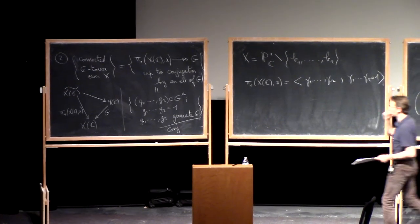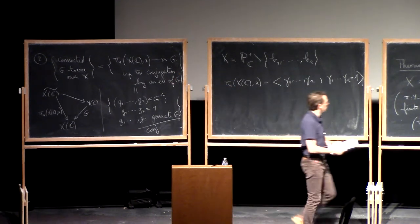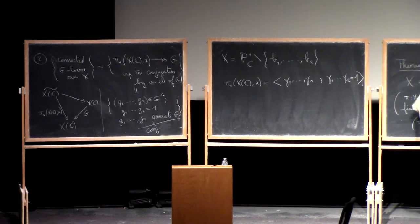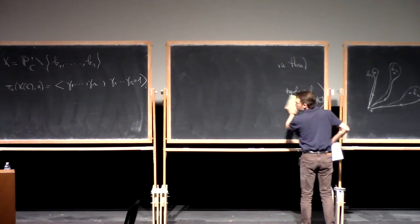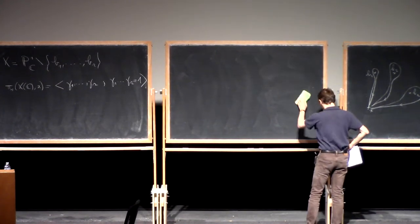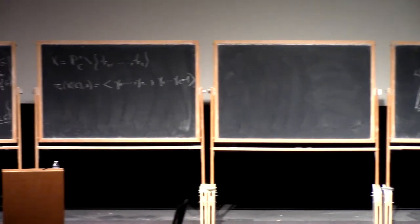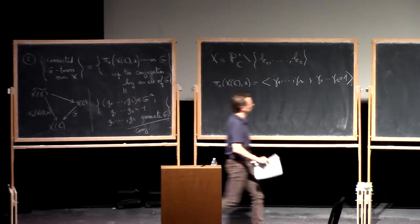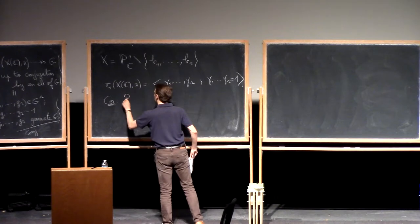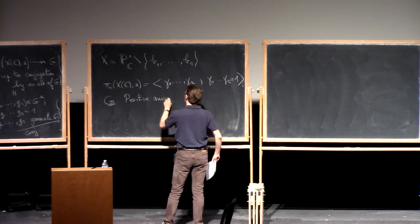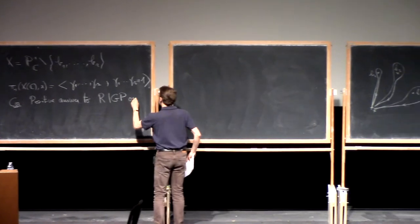This gives a direct answer to the regular inverse Galois problem over the complex numbers. Because this set is non-empty if r is large enough — that's obvious — and so by this dictionary we do get a connected G-torsor over X if r is large enough. Corollary: positive answer to the regular inverse Galois problem over ℂ for any G.